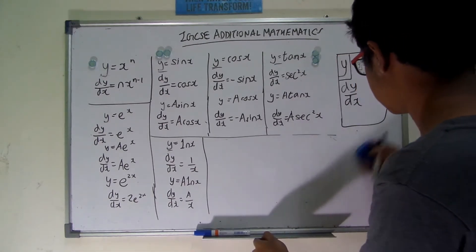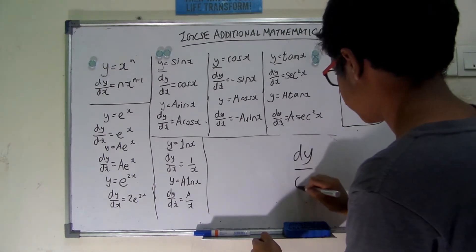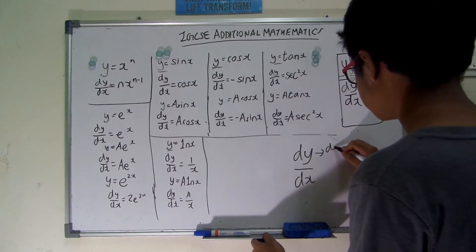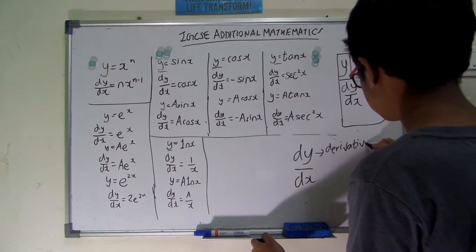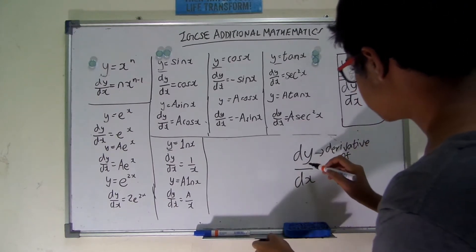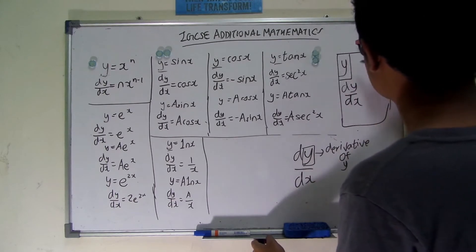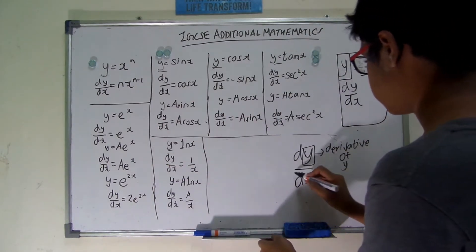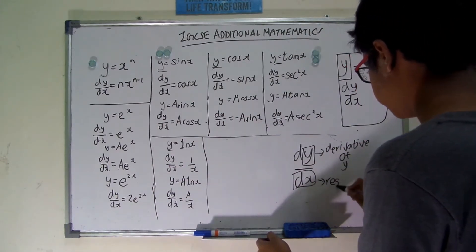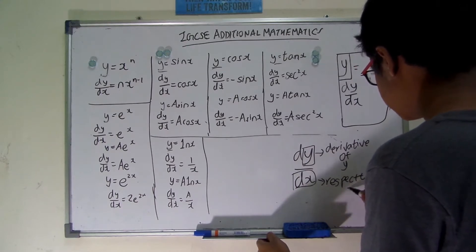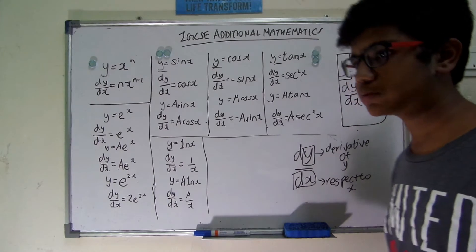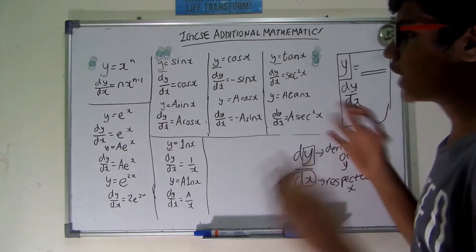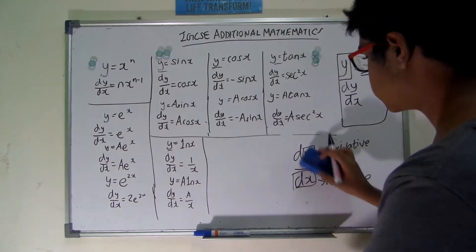The derivative is written as dy/dx. The numerator dy means the derivative of y — the function we're trying to differentiate. The denominator dx means we are differentiating y with respect to x, meaning x is the main algebraic variable we are taking into consideration.